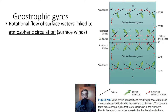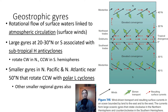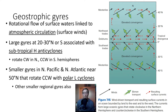Gyres are the rotational flow of surface waters linked to atmospheric circulation and surface winds. Large gyres at 20 to 30 degrees north or south latitude are associated with subtropical high-pressure anticyclones — rotating clockwise in the Northern Hemisphere and counterclockwise in the Southern Hemisphere. Smaller gyres in the North Pacific and North Atlantic near 50 degrees north and south rotate counterclockwise with large polar low-pressure cyclones.